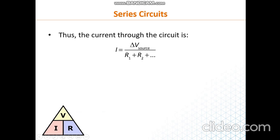The current is the same in each resistor in a series circuit. To calculate it, simply apply Ohm's law. The current equals voltage divided by resistance. So the current in any part of a series circuit is equal to the voltage of the battery divided by the equivalent resistance or the total resistance.